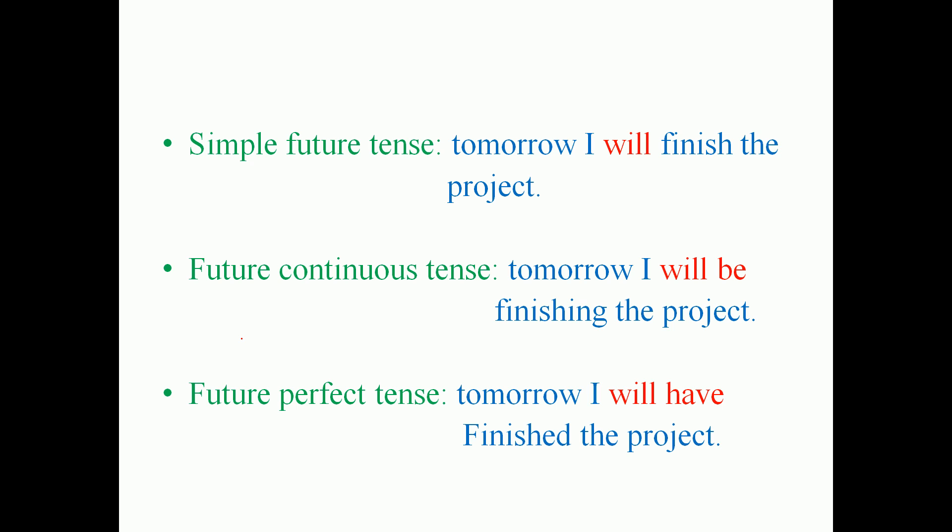After 'will have' and 'shall have', we naturally use the verb in past participle form because it is perfect tense. So after 'will have' and 'shall have', the verb is in past participle form. It talks about an action that will be completed at a certain time in the future — you take a certain time in the future, and by that time the action is going to be completed.